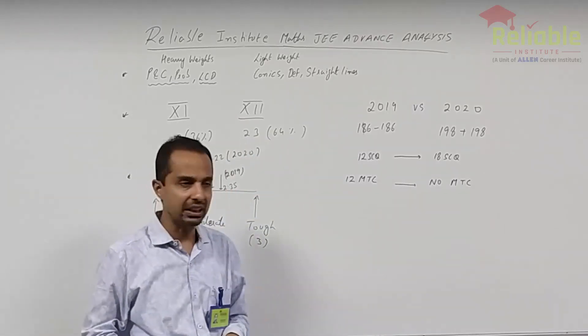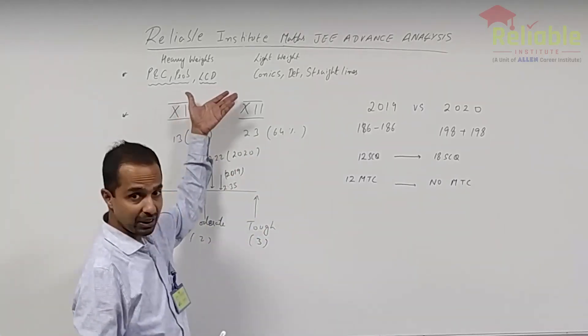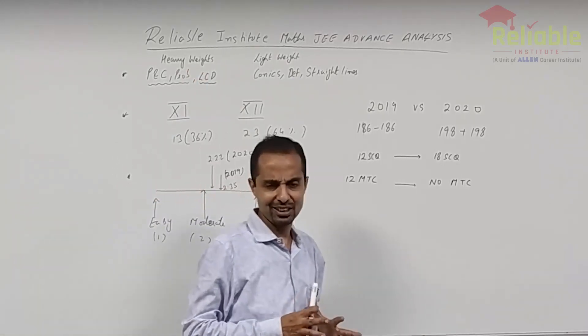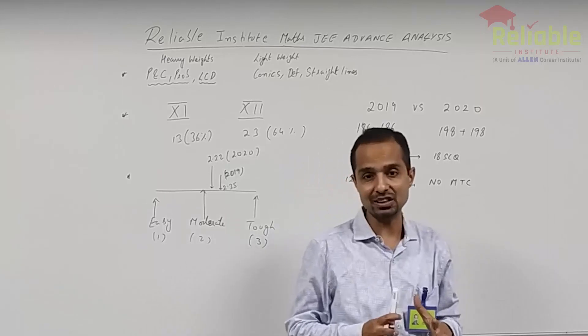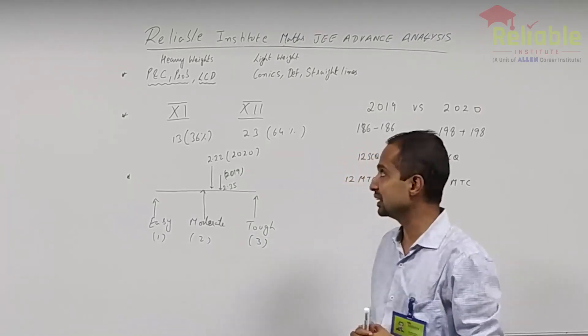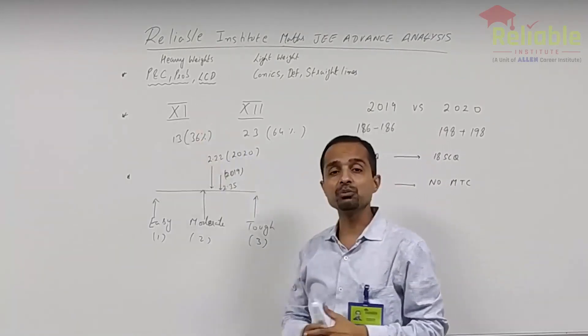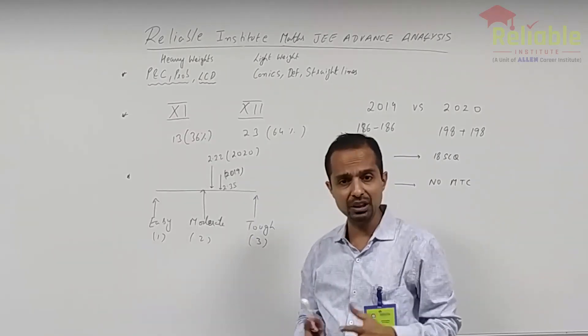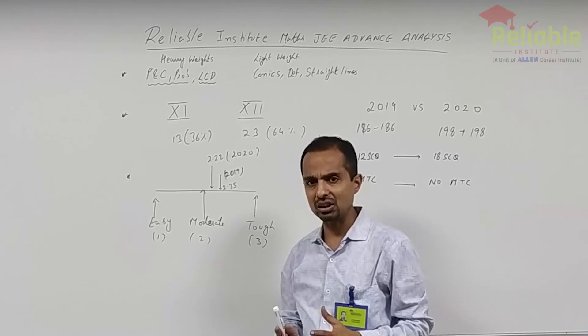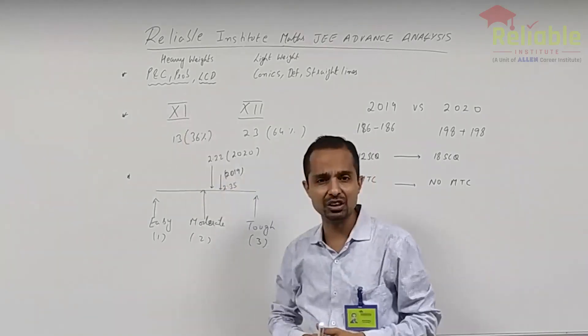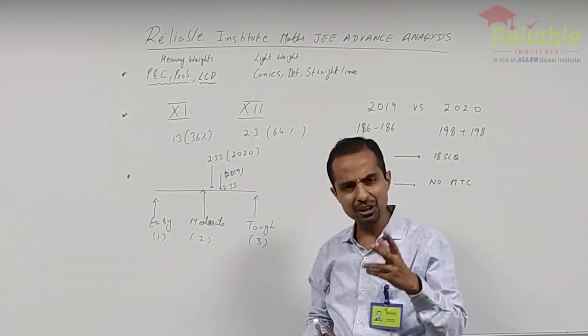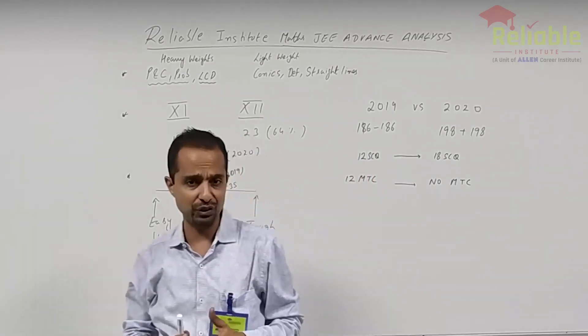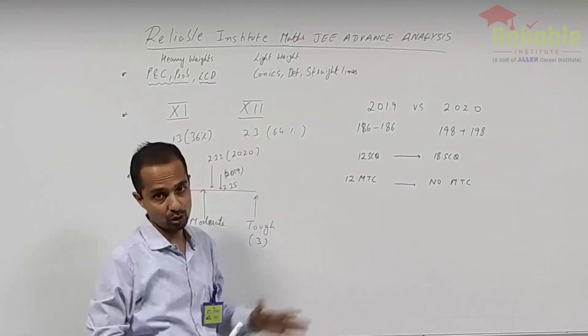If you go into detail, if you were to look at the topic wise, then this year's heavy weight was LCD. LCD was limit continuity derivative. It was really surprising. There were many questions from this chapter and again permutation combination and PNC. So five questions. Typically, these many questions are not the ones which come from PNC and probability. Typically, two questions, one from PNC, one from probability or maybe three questions, not five. And this year LCD was also very high.